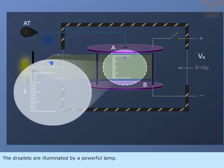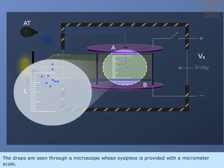The droplets are illuminated by a powerful lamp. The drops are seen through a microscope whose eyepiece is provided with the micrometre scale.